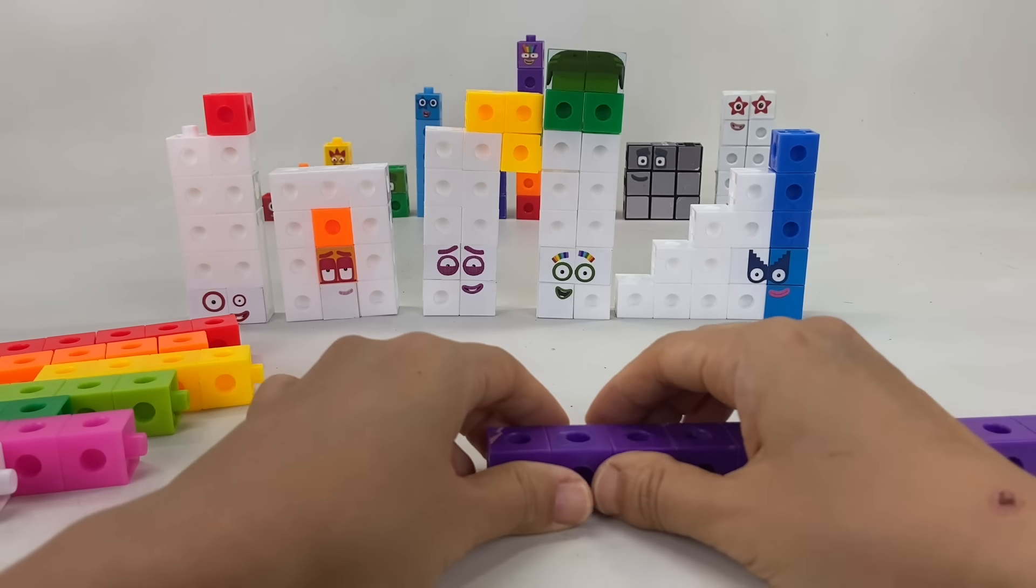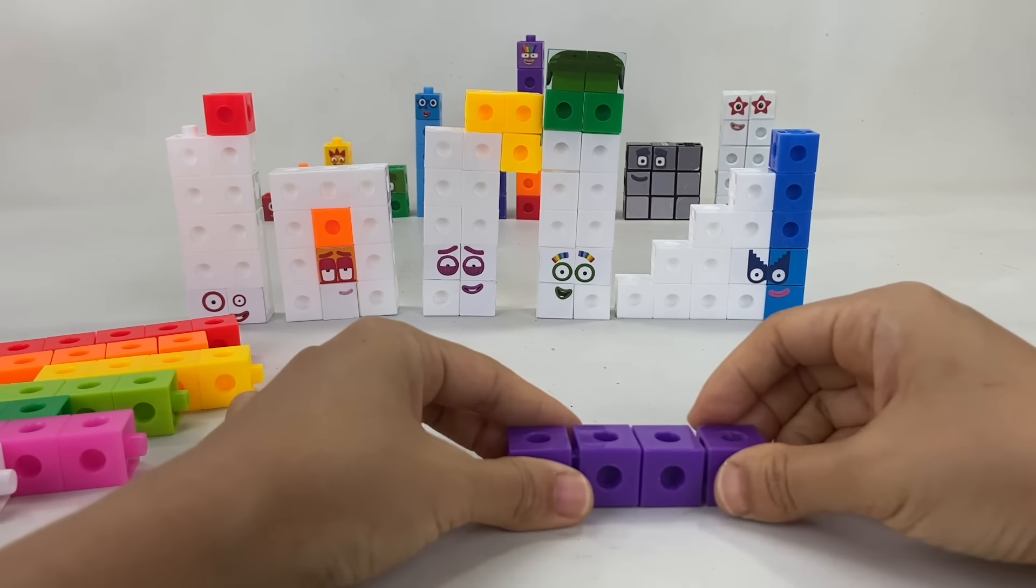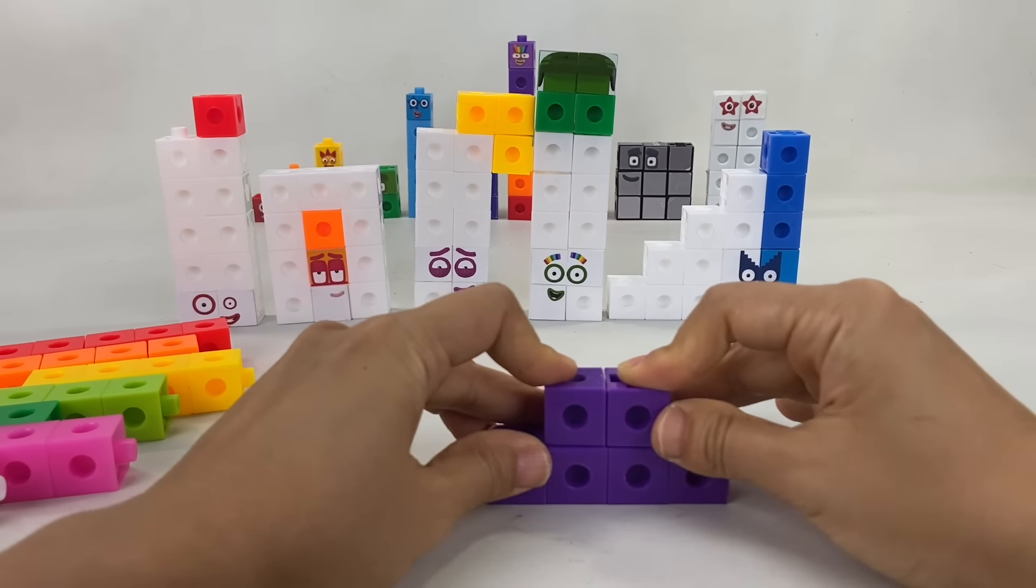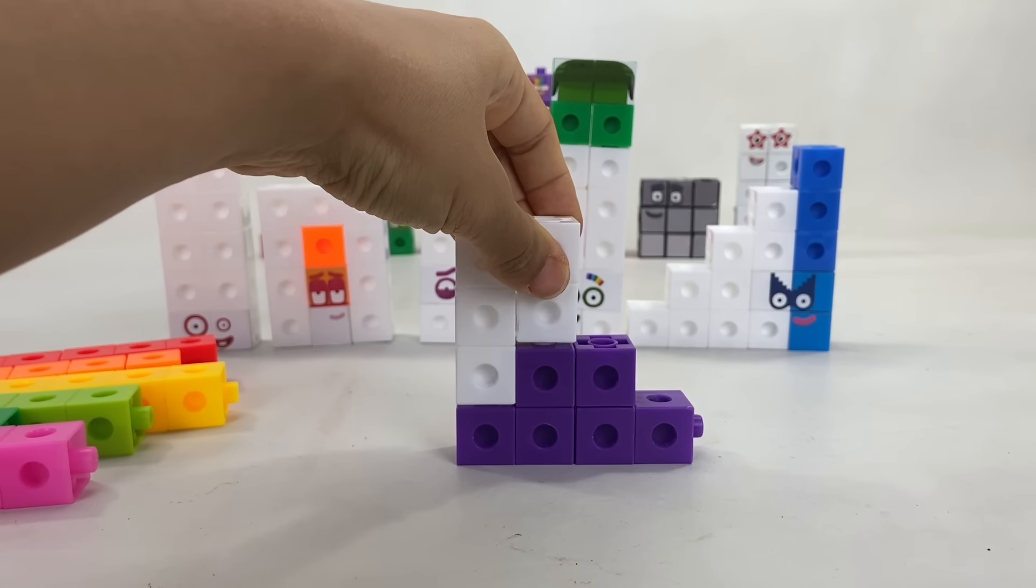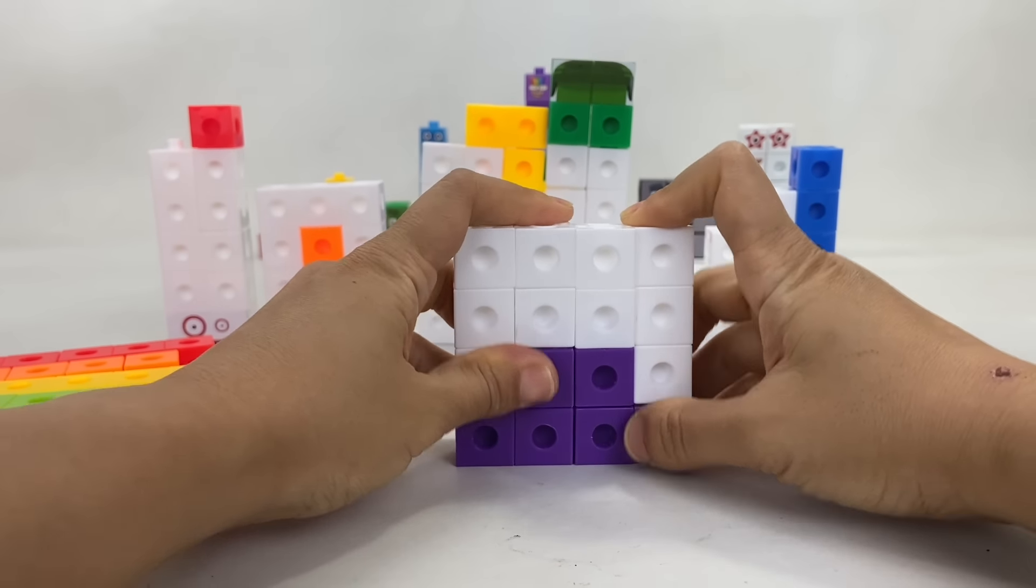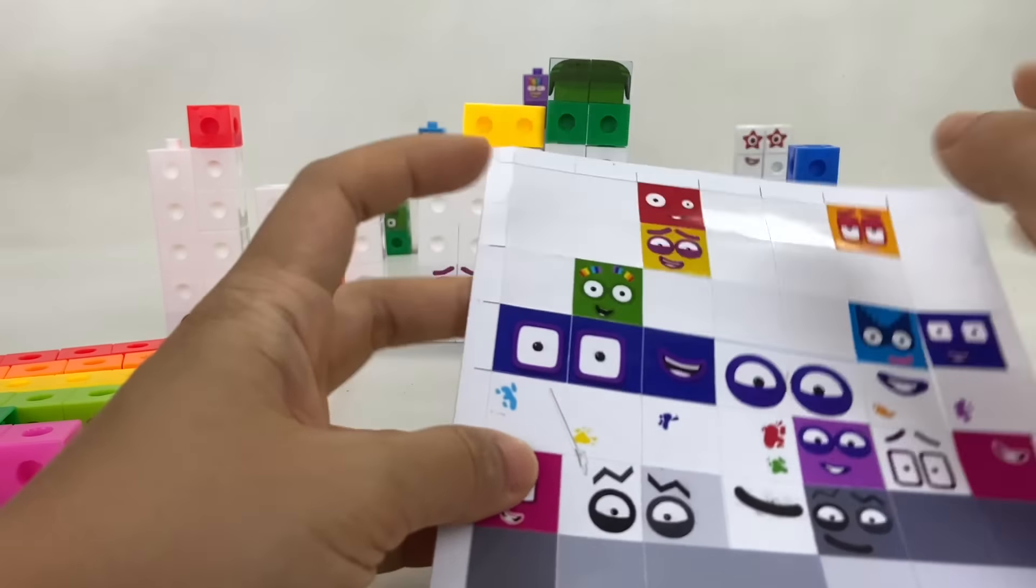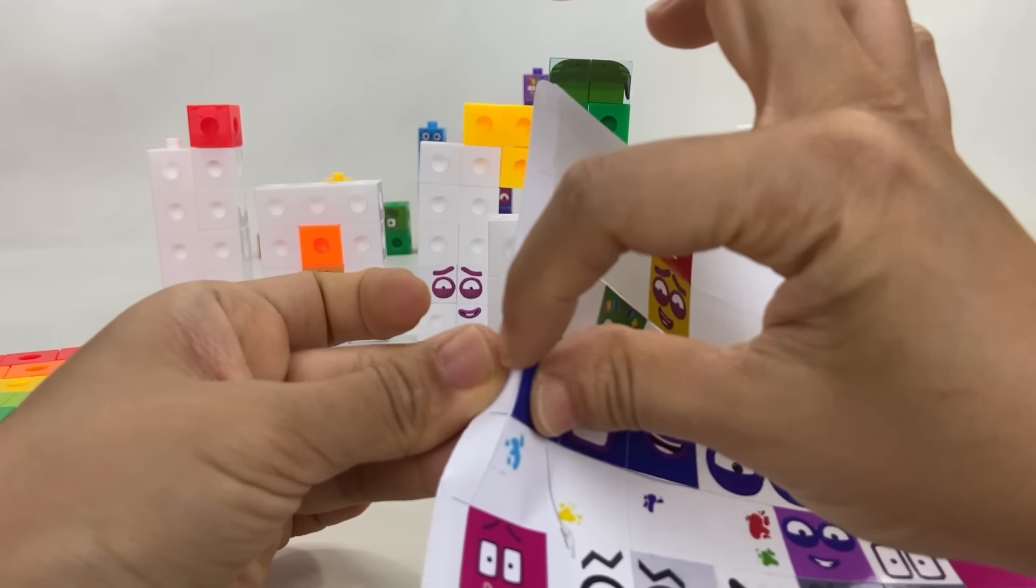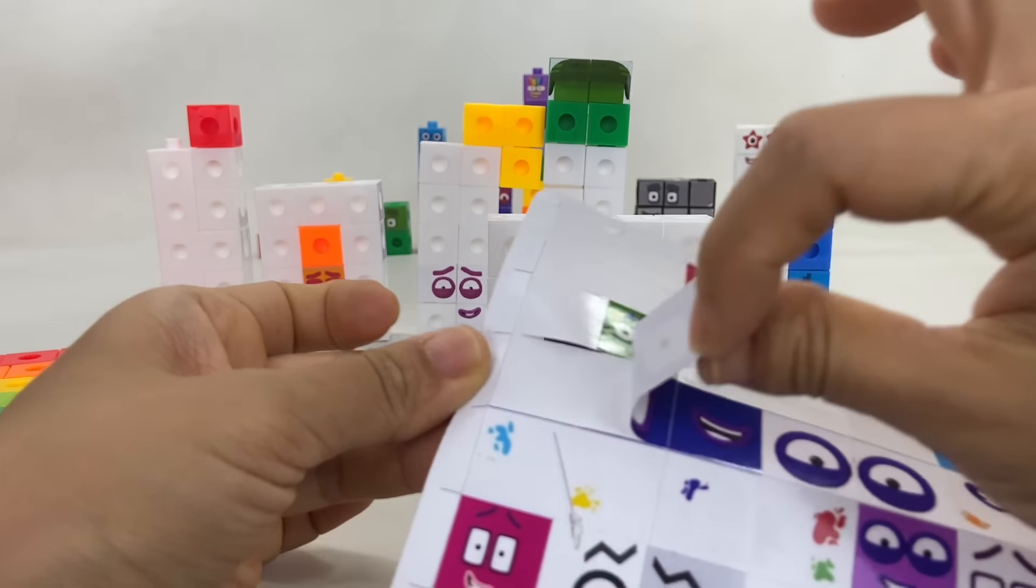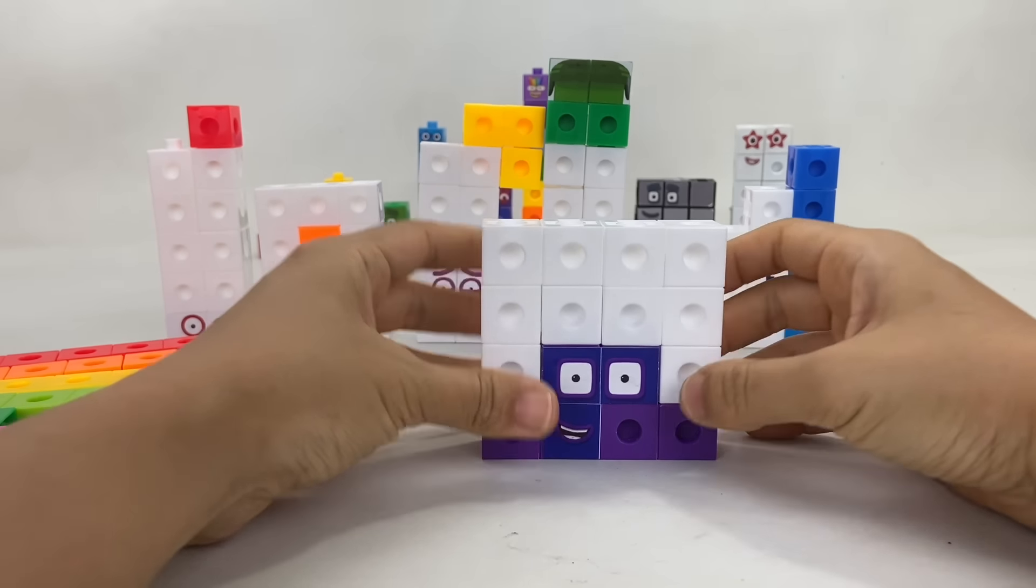Let's build Number Block 16. She's made up of 6 indigo blocks and 10 white blocks. She can have many shapes, but she usually appears as a square. We can use the stickers that we made to put her eyes and mouth. And because she's a square, she has square-shaped eyes.